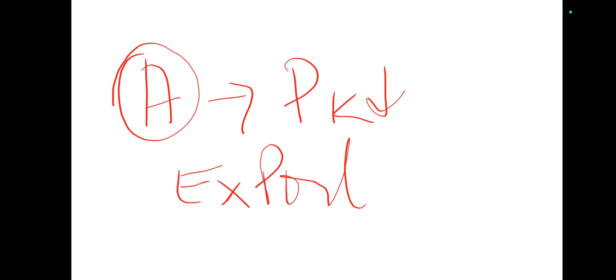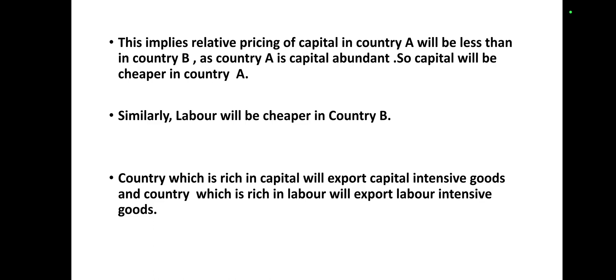Country A is capital abundant, so here we have price of capital is low. It will be beneficial for country A if it exports capital intensive goods. This implies relative pricing of capital in country A will be less than in country B as country A is capital abundant and so the capital will be cheaper in country A. Country A will be going to export the capital intensive product.